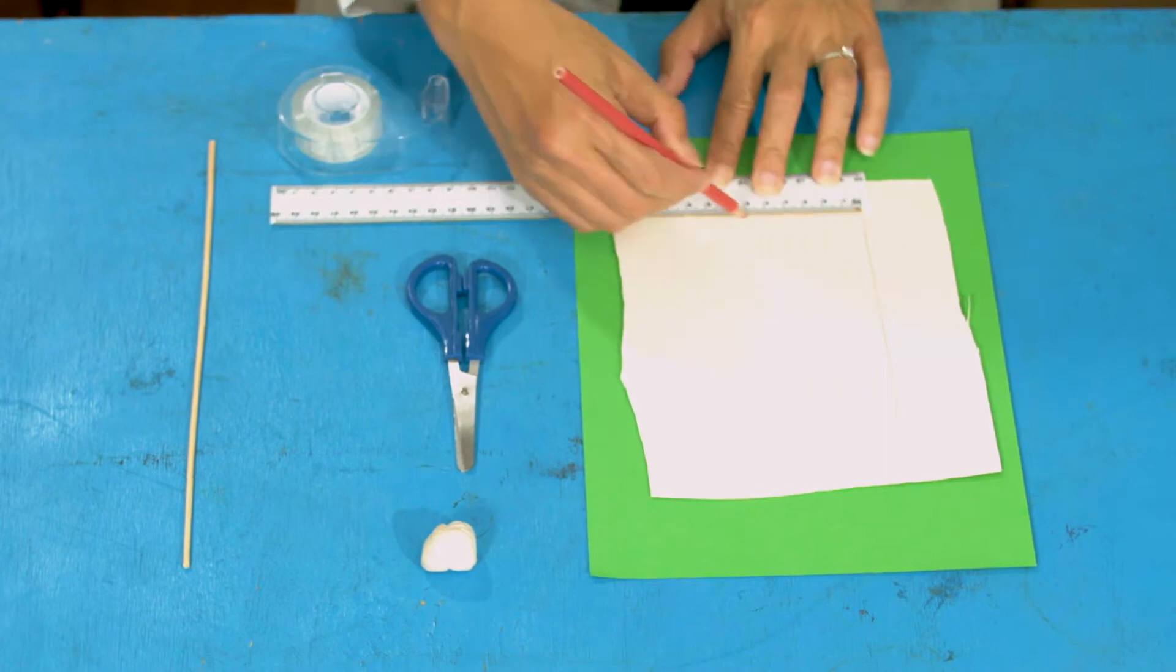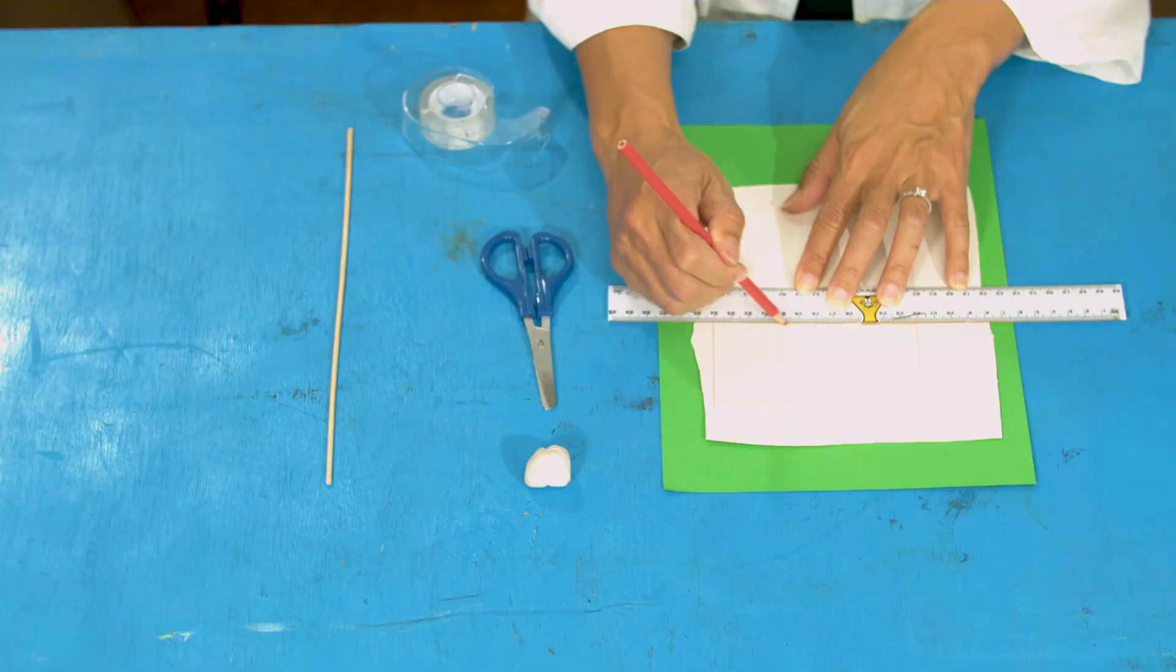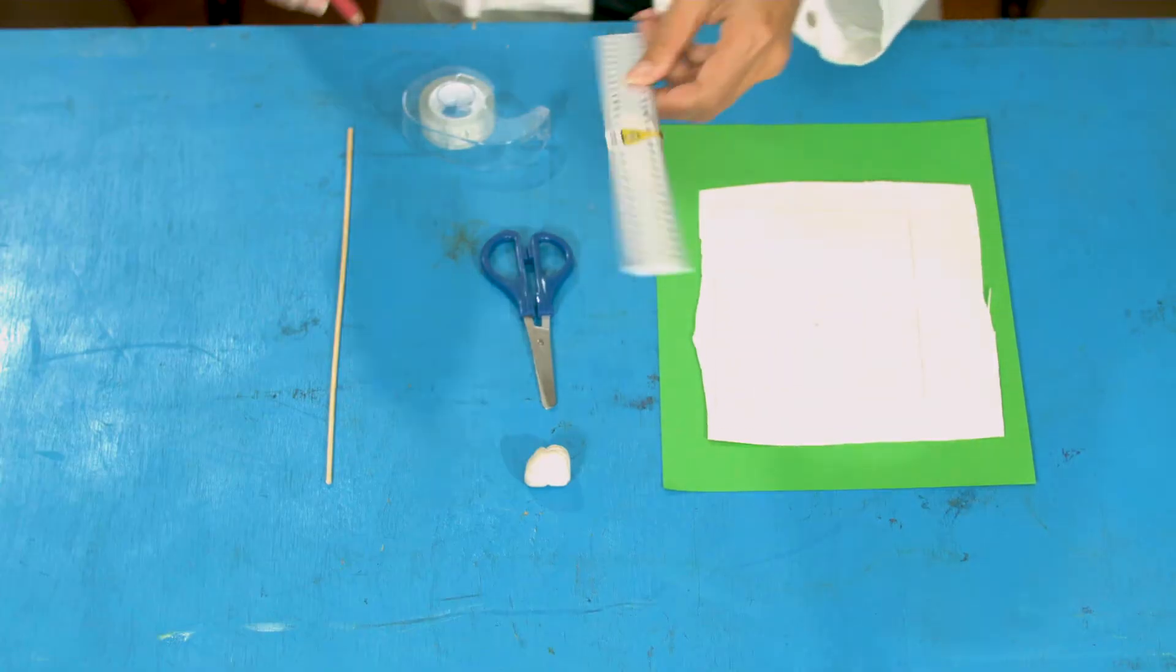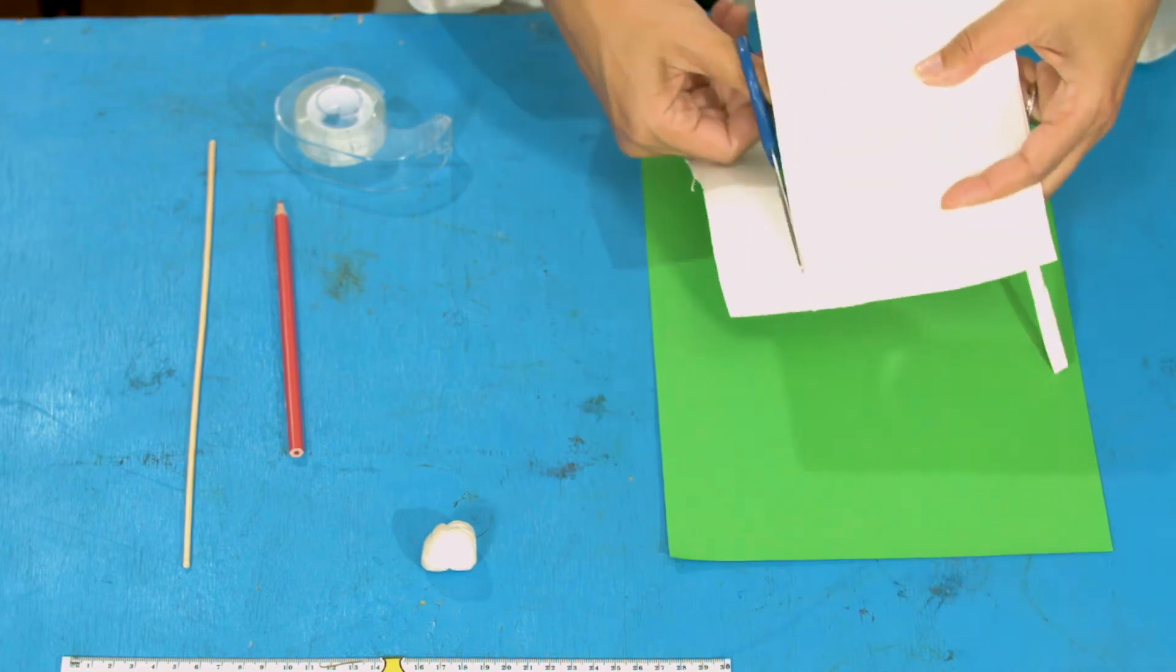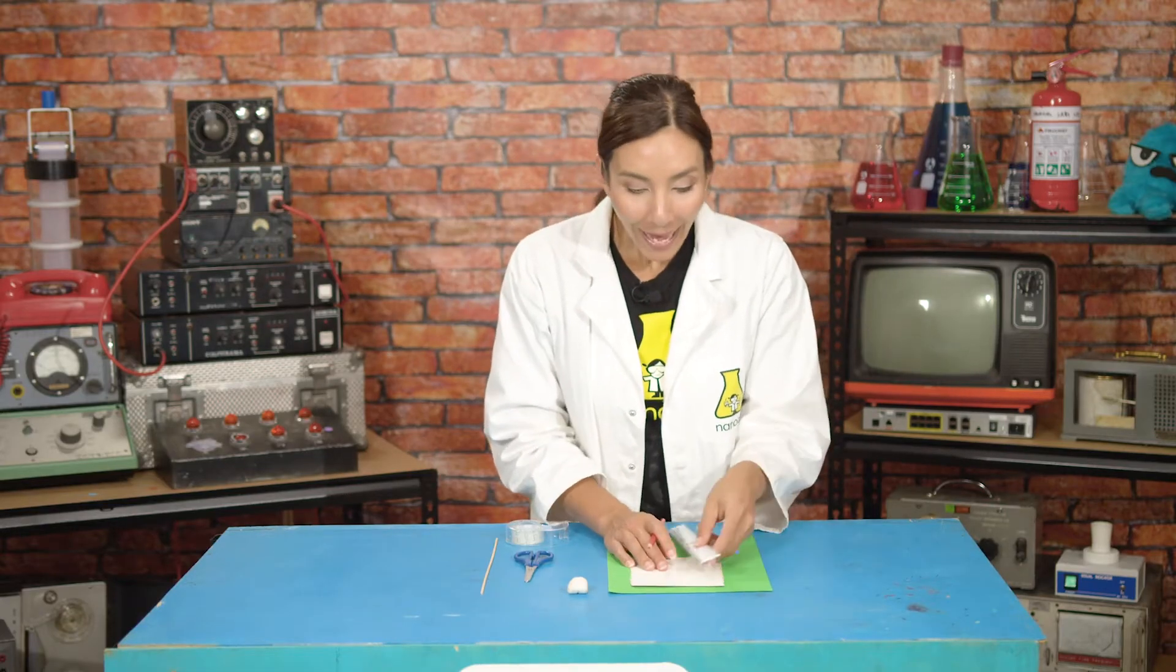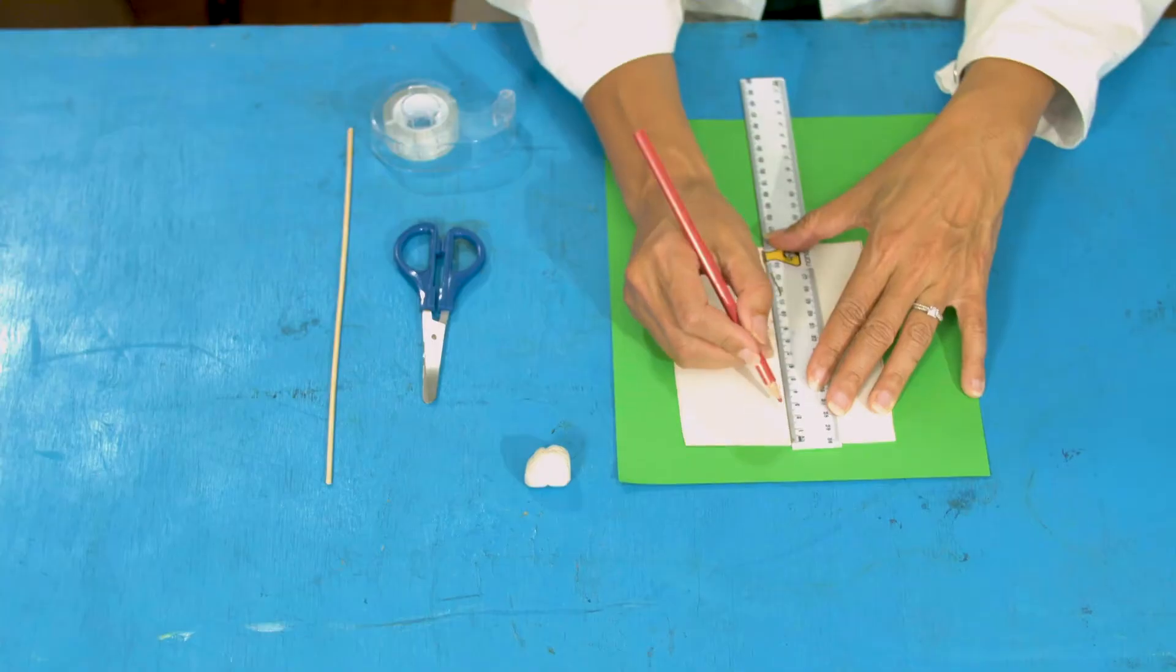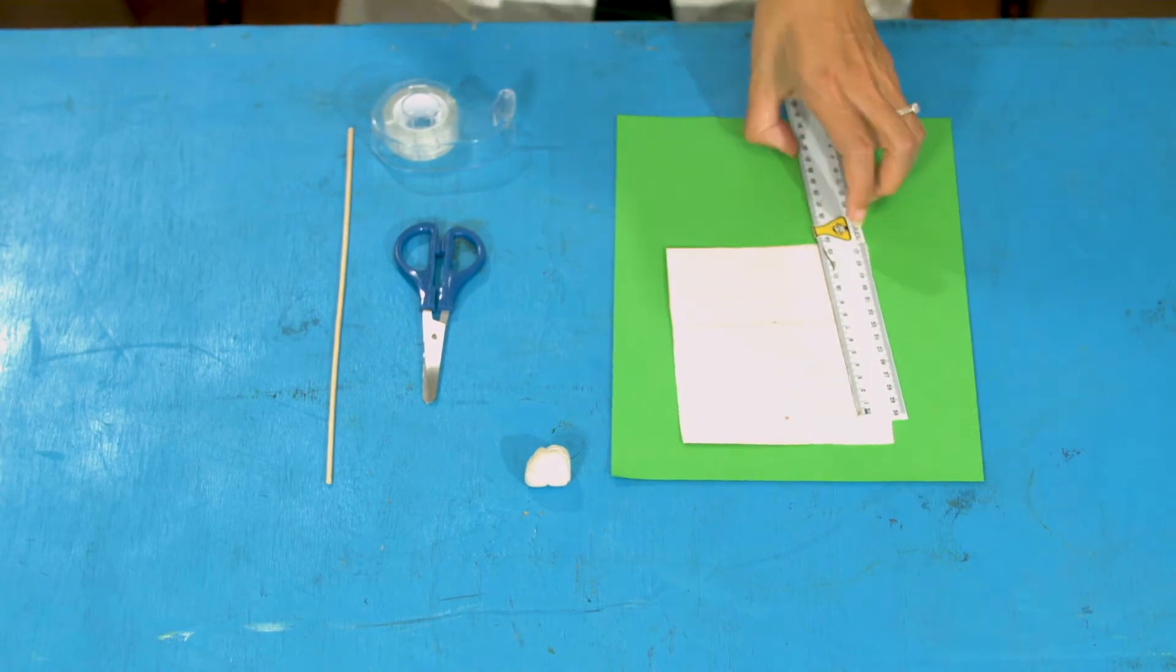We are going to draw a rectangle 15cm long and 12cm wide onto the card. Now we are going to measure 6cm in from the top and draw a line across to create two rectangles that look like this. We are going to cut this shape out.